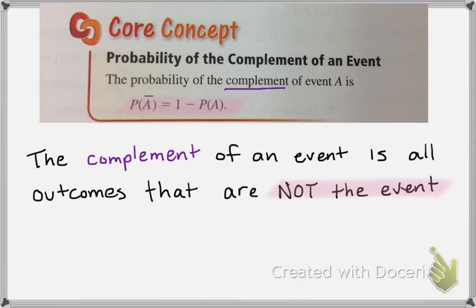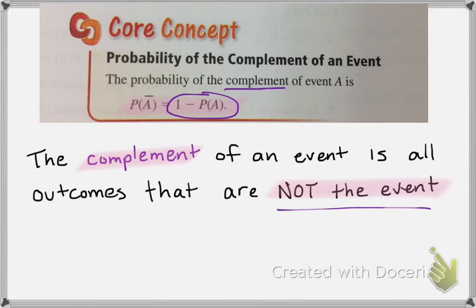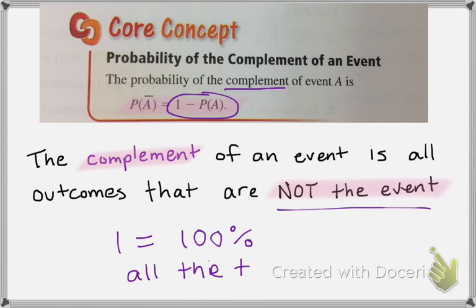The last thing we're going to talk about is a different way you can find the probability of something happening, and that's by finding the probability of something not happening — that's what's called the complement. The complement of an event is all the outcomes that are not favorable. You can do 1 minus the chance of something happening to get the chance of something not happening, or vice versa. The reason we use 1 is that 1 represents a 100% chance — it will happen all the time. This P(A) with a line on top is how you denote the complement of an event. The complement doesn't always save time, but sometimes it saves quite a bit.